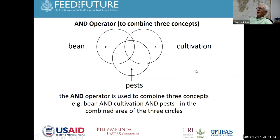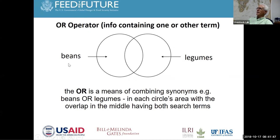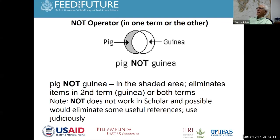The OR Boolean operator is a way of broadening your search. For example, if we're looking at beans and also want to include legumes, OR combines two synonyms. You can see how it overlaps in the middle but brings in a lot more results — putting 'beans OR legumes' in parentheses. The NOT operator eliminates terms: if you want pigs but not guinea pigs, the NOT operator gives you only the livestock results, excluding guinea pig. Note that NOT doesn't necessarily work well in Google Scholar.